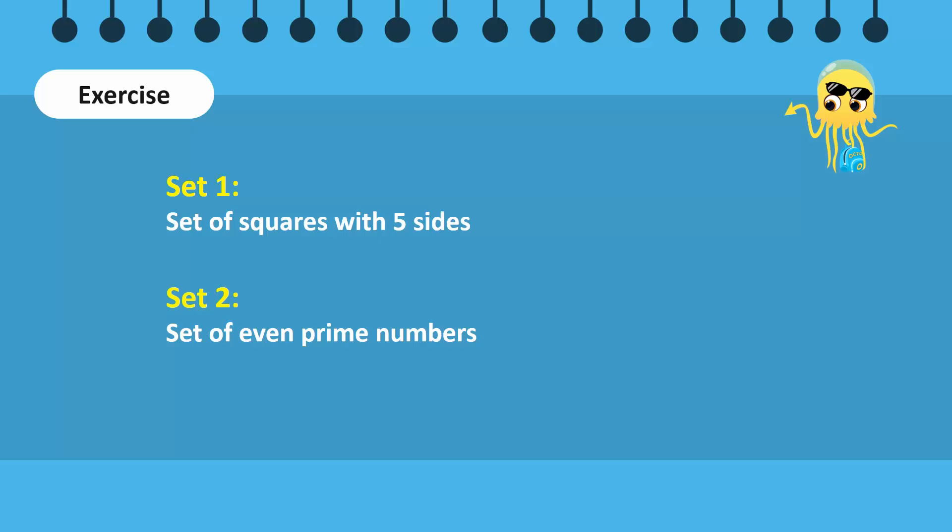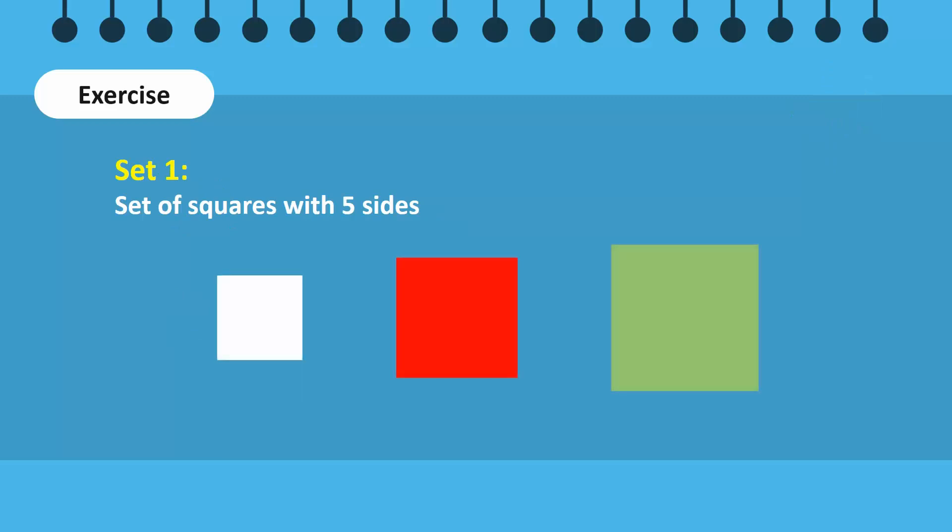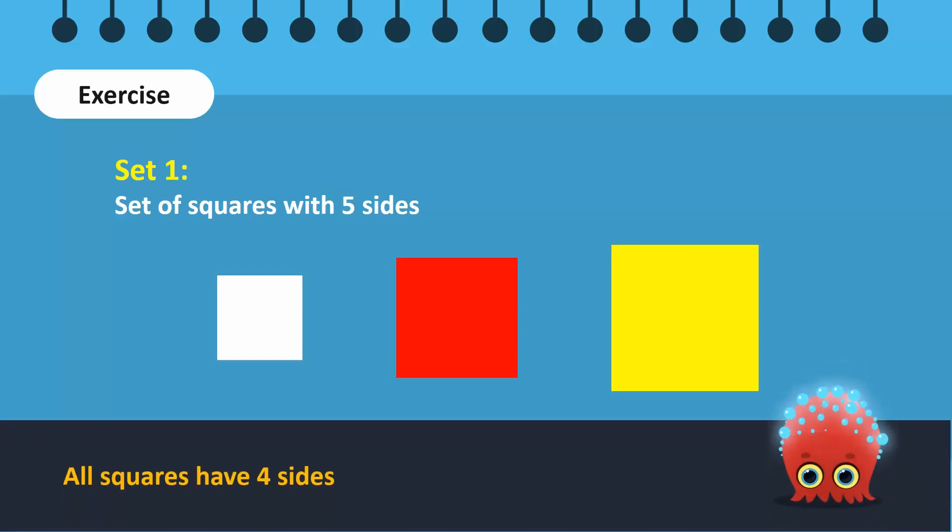Let us review. Have you seen any square with five sides? The answer is no. All squares have four sides. Therefore, this set has no elements. It is an empty set. We express it with empty braces or phi.